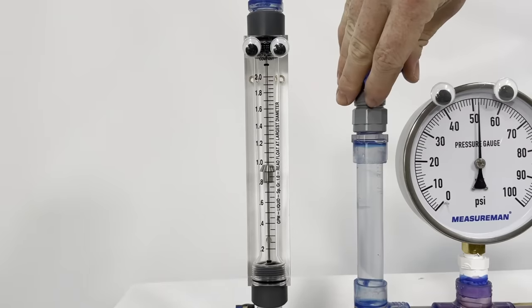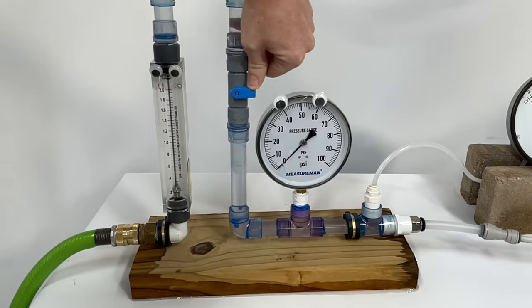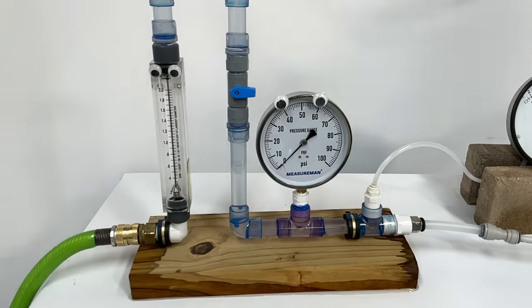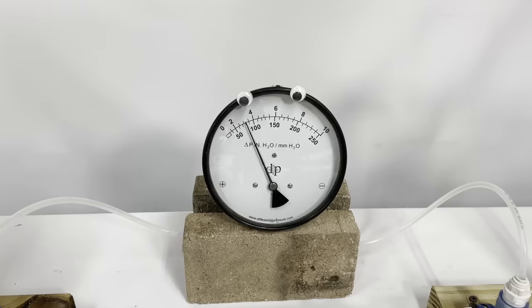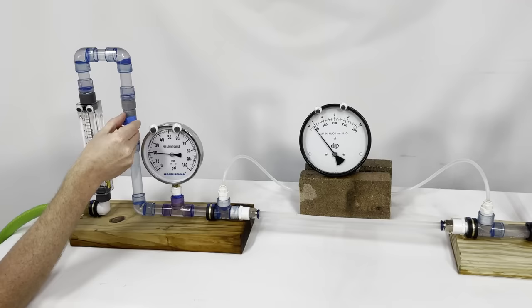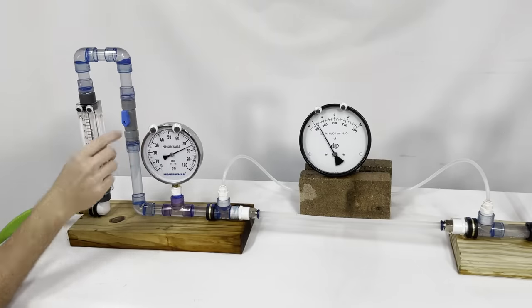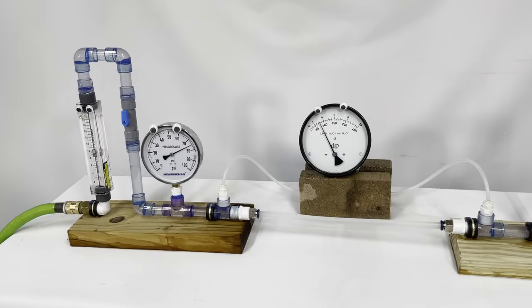The first one measures the flow rate in gallons per minute. The second one measures the pressure in the pipe in pounds per square inch. And the third gauge measures the difference in pressure before and after the sample, also called the head loss, in inches of water. In other words, this gauge measures how much pressure is lost through friction and turbulence in the sample. This is the one to keep your eye on.